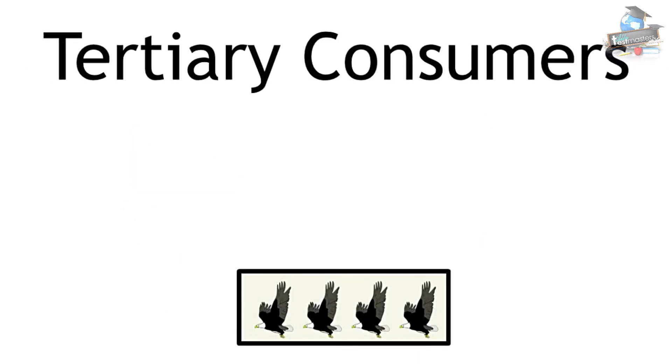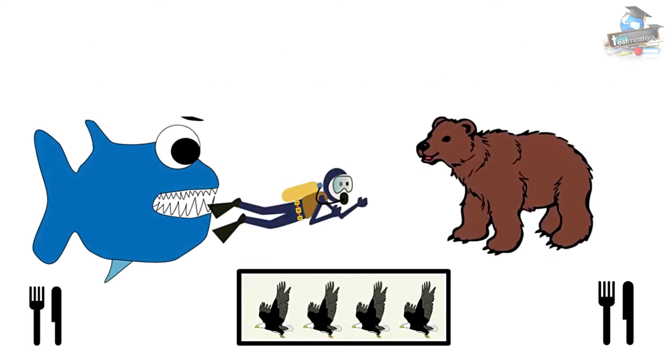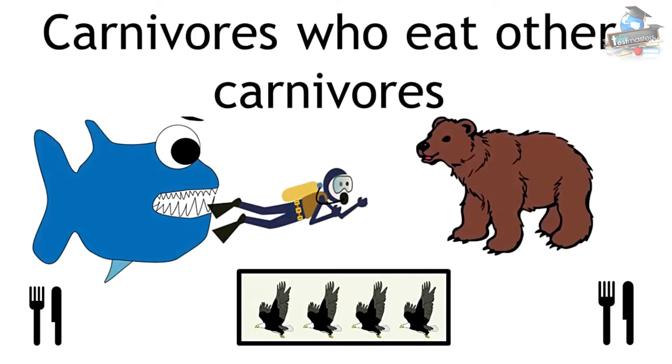Secondary consumers are followed by tertiary consumers. Level 4 is carnivores who eat other carnivores.